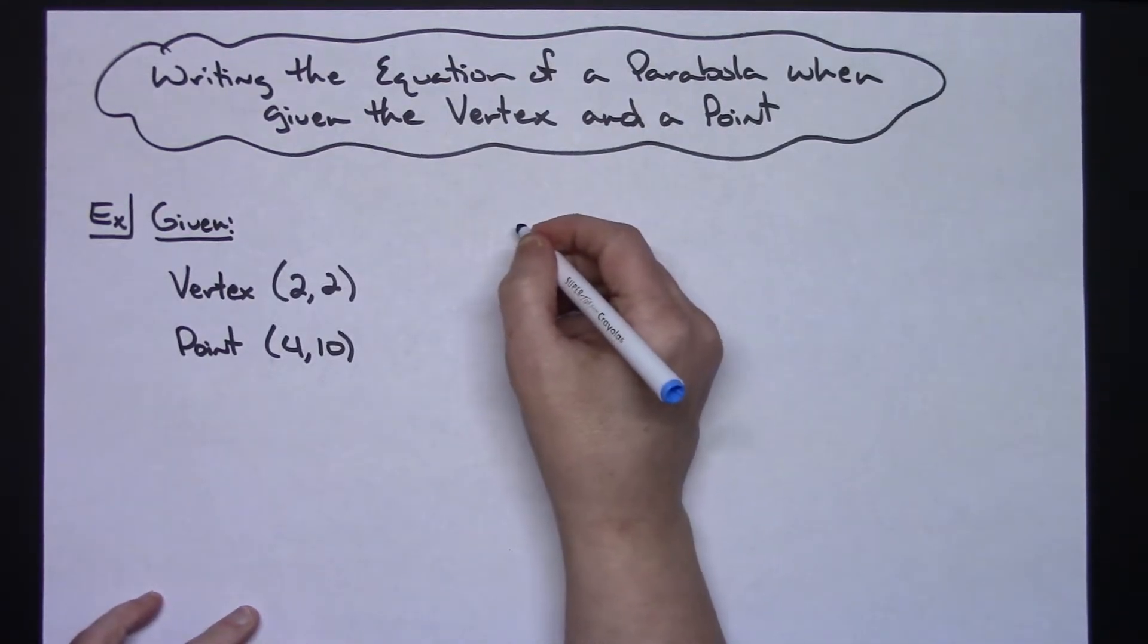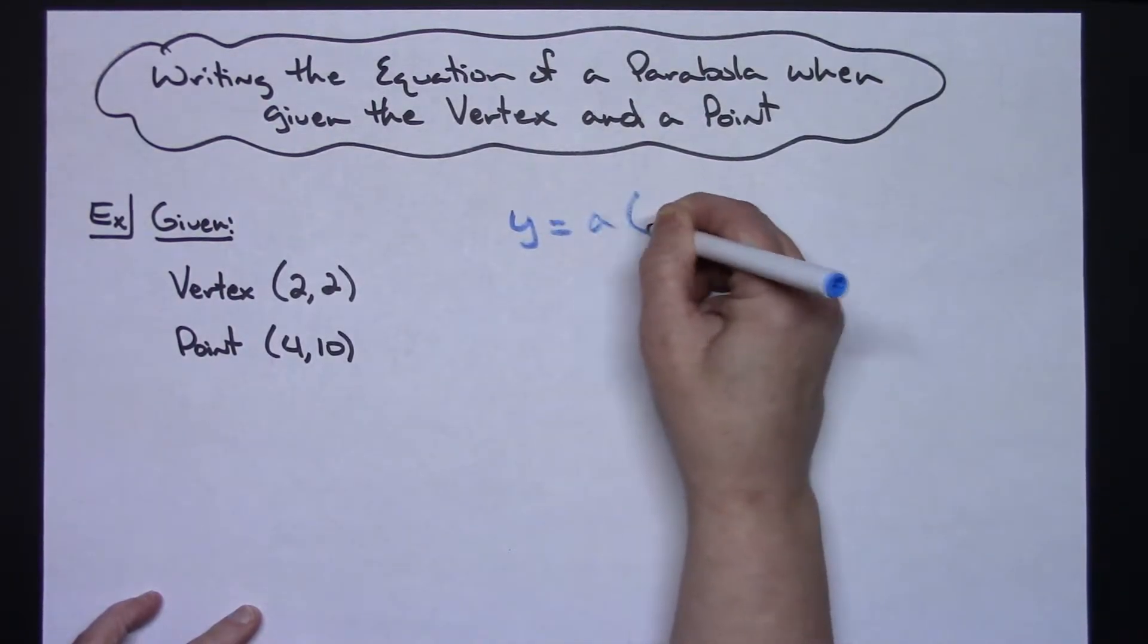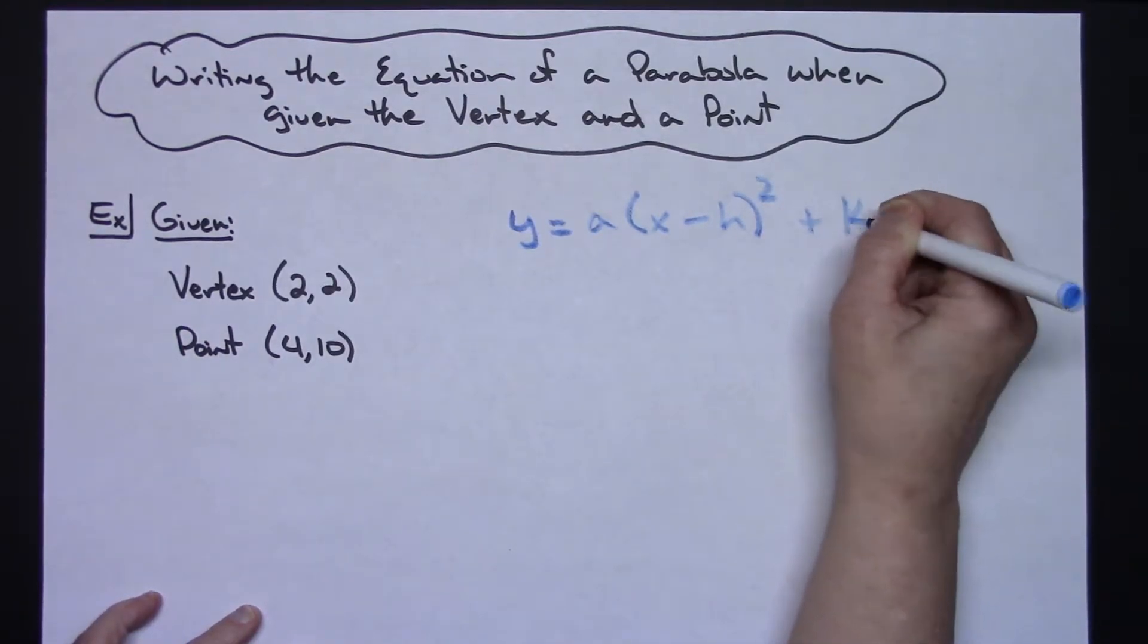We're going to take a look at the formula for a parabola in vertex form and that would be y equals a(x minus h) squared plus k.